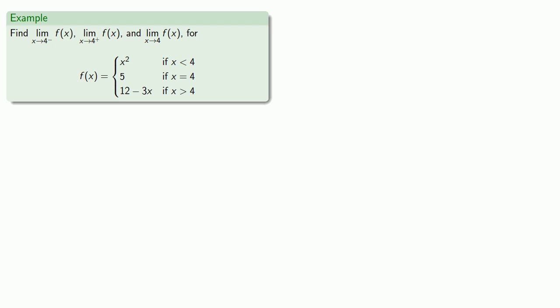This type of problem often shows up when we're dealing with functions that are defined piecewise. So let's take a look at the limit as x approaches 4 from below, the limit as x approaches 4 from above, and the limit as x approaches 4 unqualified. So as long as x is less than 4, our function is going to be x squared.